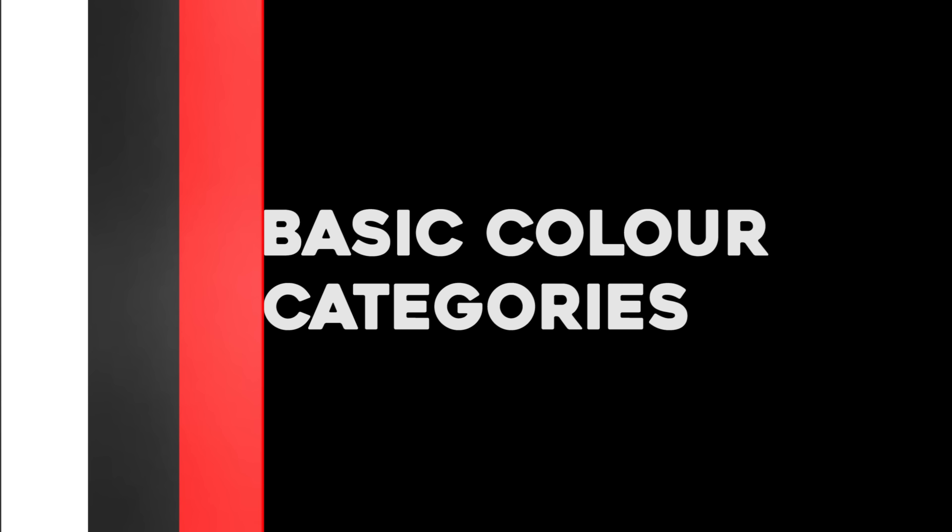Those 11 categories are: white, black, red, green, yellow, blue, brown, purple, pink, orange, and gray. In particular, they noticed that some languages didn't have all 11 words, and that there was a pattern for which words a language had. Words for brown, purple, pink, orange, and gray were never present in languages that didn't already distinguish between green and blue.